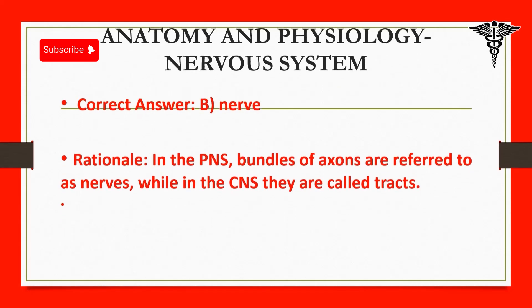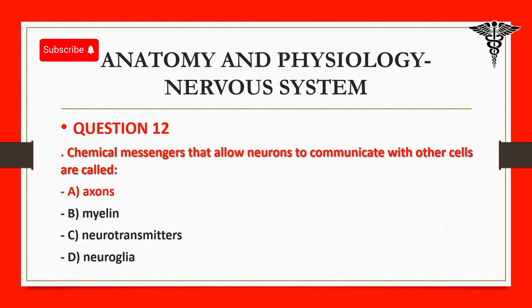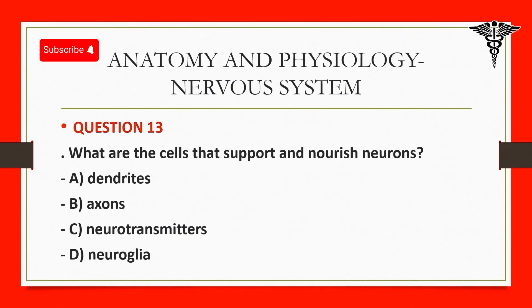Question 12: Chemical messengers that allow neurons to communicate with other cells are called: A. Axons. B. Myelin. C. Neurotransmitters. D. Neuroglia. Correct answer: C. Neurotransmitters. Rationale: Neurotransmitters are chemicals that transmit signals across synapses, allowing communication between neurons and other cells.